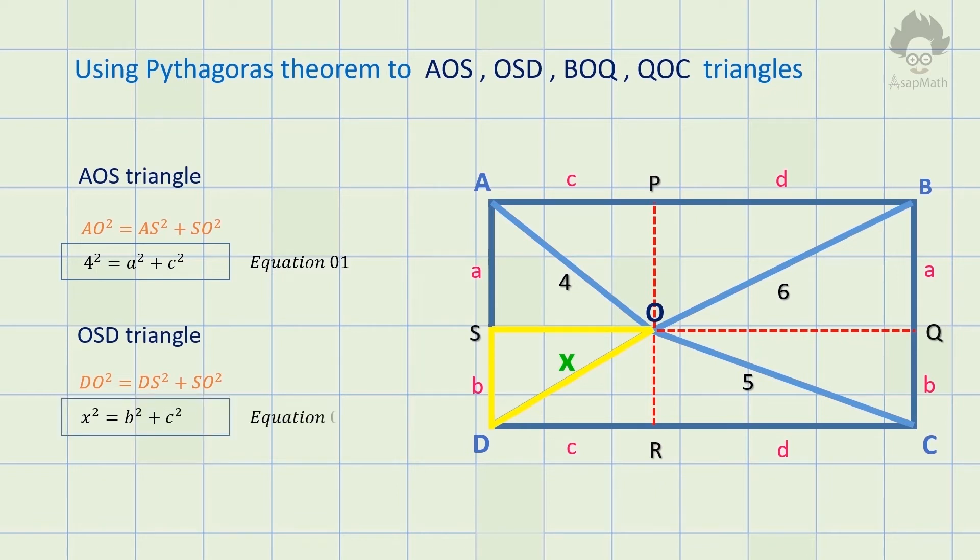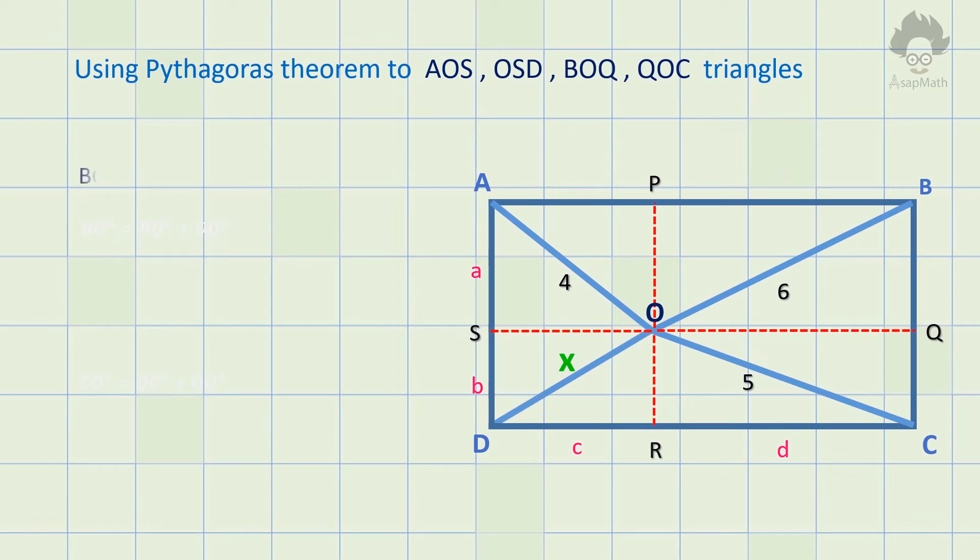Now do you have any idea how to proceed? Then consider triangle BOQ. BO squared equals BQ squared plus OQ squared, so 6 squared equals a squared plus d squared and name this as equation 3.